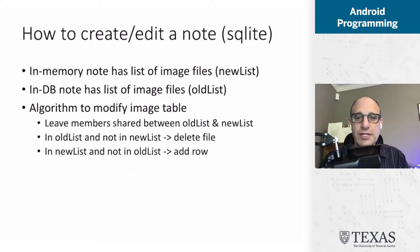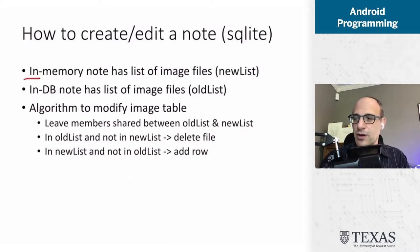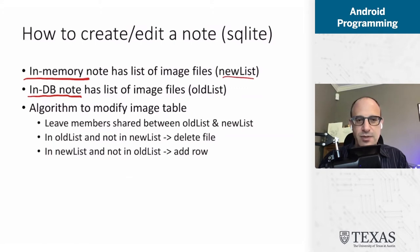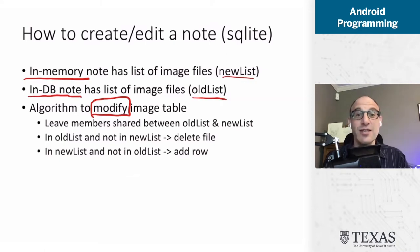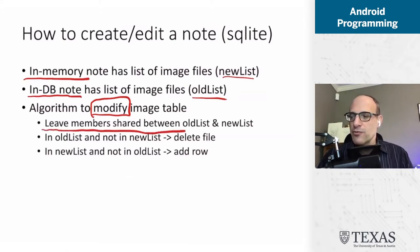Let's think through conceptually what this requires. How do we create or edit a note in the SQLite case? Our in-memory note has a list of images — that's going to be the new list. The note in the database also has a list of image files — that's going to be the old list. When we want to modify the image table, we have to think it through carefully given the way tables are structured.